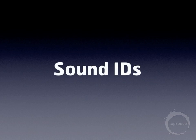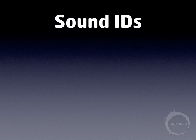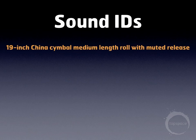One of the main components of Sound World is the Sound ID. Essentially, a Sound ID is just a structured name that describes a sound. Let's take a look at just one specific sound from the Virtual Drumline Library. The Sound ID we're going to be looking at here defines a 19-inch China cymbal, crescendo roll, of medium length, that mutes upon release.